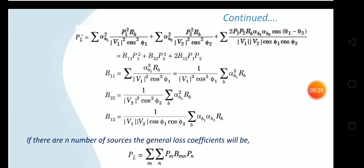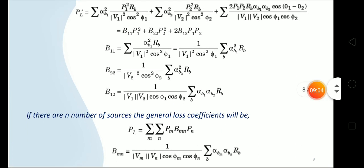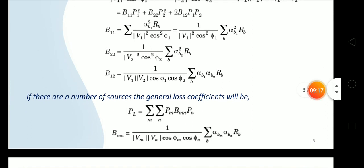This can be written as P_L = B11·P1² + B22·P2² + 2·B12·P1·P2, where B11 = Σ[alpha_B1²·R_B]/(V1²·cos²phi_1), and B12 = Σ[alpha_B1·alpha_B2·R_B]/(V1·V2·cos(phi_1)·cos(phi_2)). For N generating units, the generalized equation is P_L = ΣΣ P_m·B_mn·P_n, where B_mn = Σ[alpha_Bm·alpha_Bn·R_B]/(V_m·V_n·cos(phi_m)·cos(phi_n)). This is the power loss equation in terms of power generation P_n and P_m.